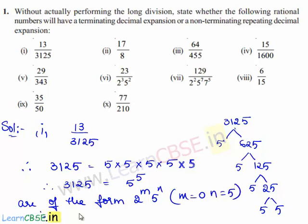Therefore, the given rational number has a terminating decimal expansion.